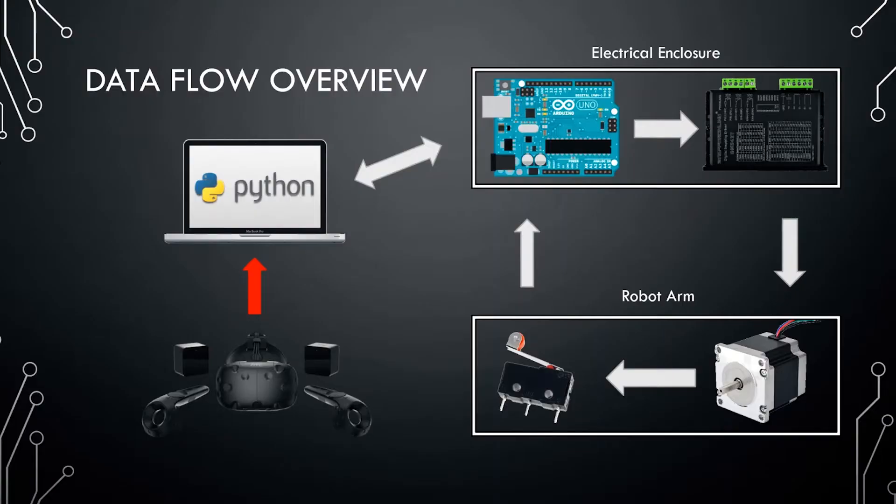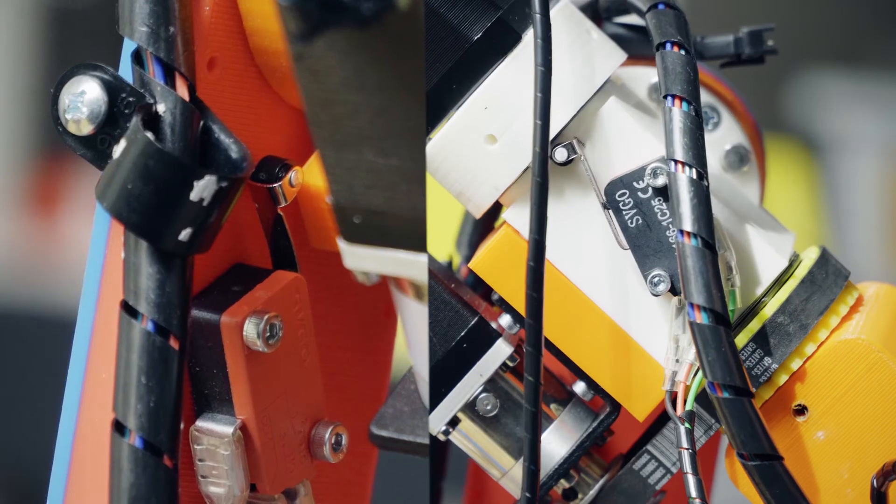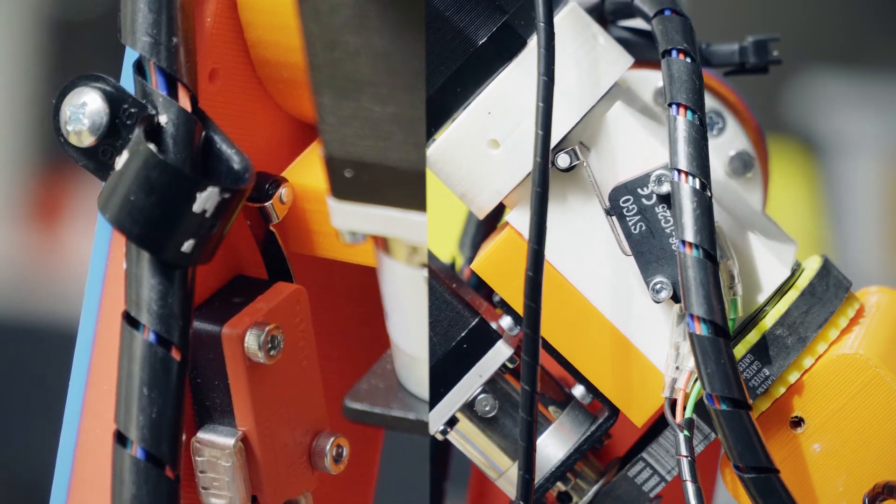This information then is sent to the Arduino in the electronic enclosures, which also receives a signal from the limit switches which stop the arm from moving too far than it actually can.